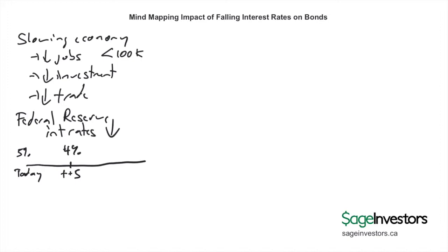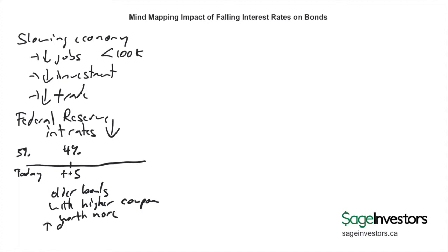Now, as an investor looking to buy bonds in the market, which bonds are you going to be more interested in? You're going to want bonds that give you a higher yield — a higher interest rate. So if you had to choose between a 4% bond and a 5% bond, all things being equal, you're going to want the 5% one because it pays you more. That means those older bonds with higher coupon rates are going to be worth more, there's going to be greater demand for them, they'll be priced higher, and there's a greater likelihood you can generate a capital gain by selling them before they mature.